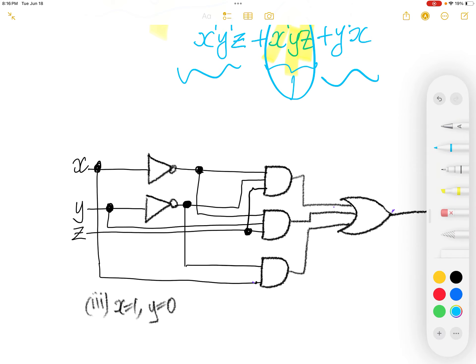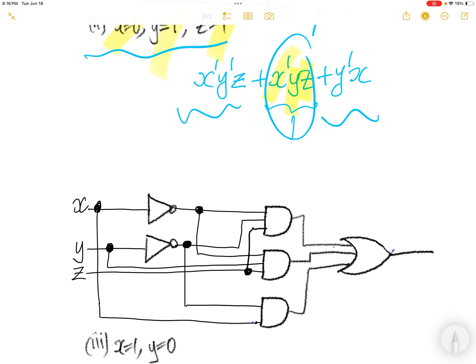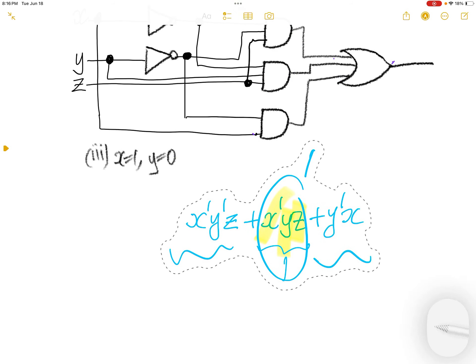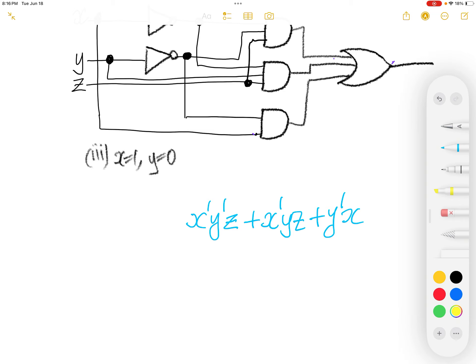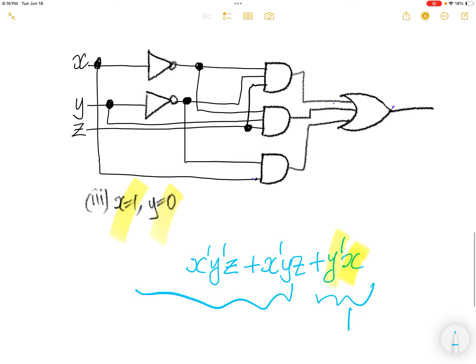For this one, let us use this again. And let us remove the junk. X is 1, Y is 0. So this result in a 1 or 2. Without looking at the rest, we know the output of this OR gate is 1. Why? Because anything with anything or 1 is 1.